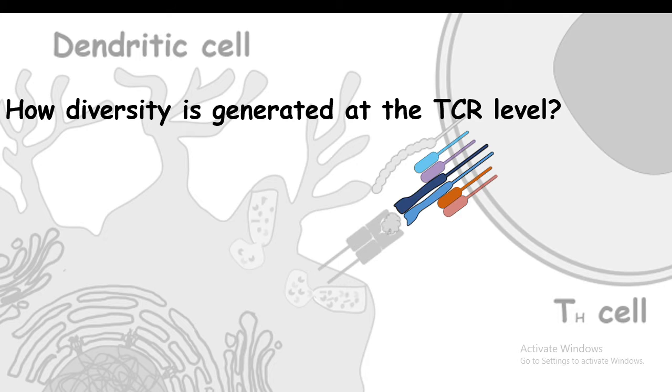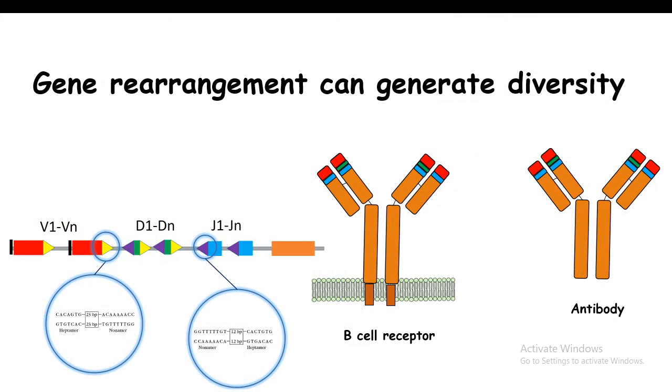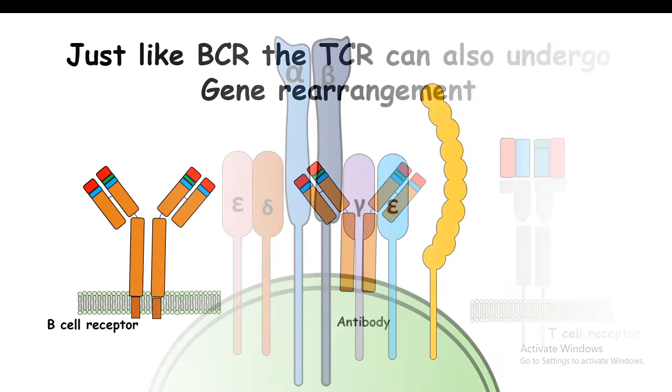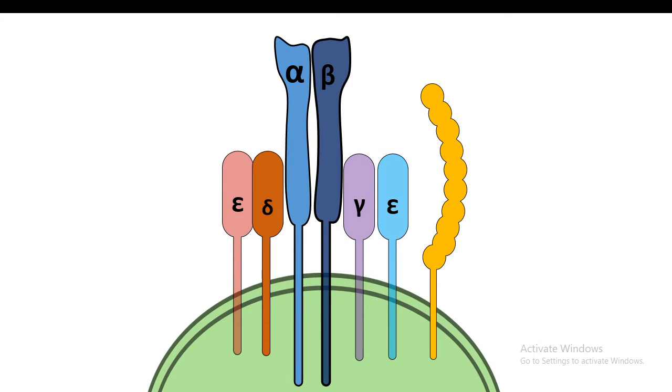The question is how the diversity is generated at the TCR level, and the answer is gene rearrangement which can possibly generate these diversities. I'm pretty sure you guys know that B cell receptors or antibody genes undergo VDJ recombination.